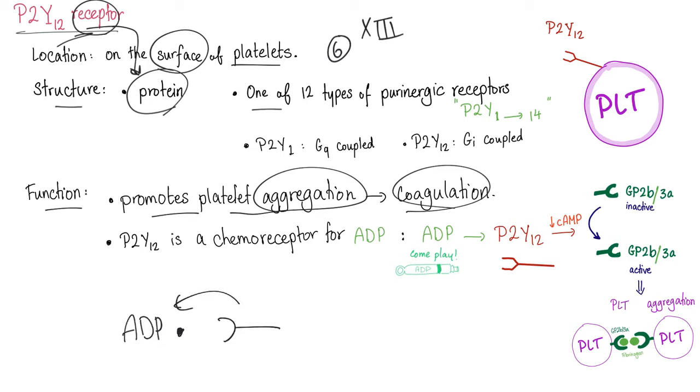P2Y12 is GI coupled, which will lead to decreased cyclic AMP. When you decrease cyclic AMP, the GP2B3A from inactive is being transformed into active. Well done, platelet aggregation. And this is the story of primary hemostasis. This is precisely how P2Y12 works by lowering the cyclic AMP.